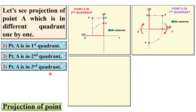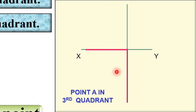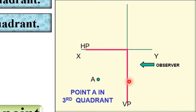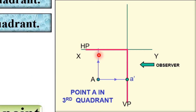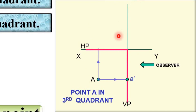Next, point A is in the third quadrant. Here you can see this is the third quadrant. If you look from this direction, the front view is on the VP and is denoted by a-dash, and the top view is on the HP and is denoted by 'a'. Once again you have to rotate the horizontal plane in the clockwise direction so it will be over here — this is the position of point A.